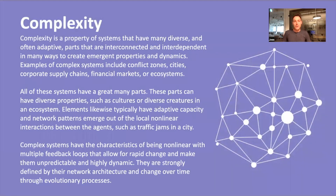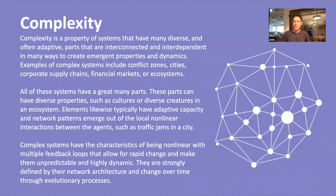We're back to talk about complexity. We just looked at systems and a relatively simple one that had a few elements and interrelationships. Systems can over time evolve to become very complex. We'd say complexity is a property or feature of a system characterized as having many parts, many diverse parts, with adapted capacity, highly interconnected and interdependent, creating emergent overall dynamics. When you see a system like that, you can say that it is complex.